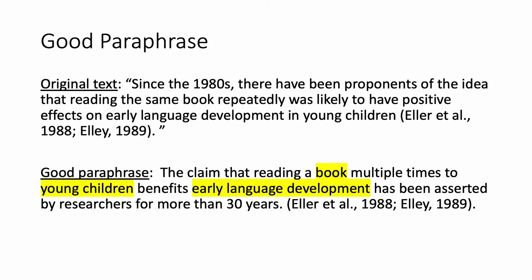Here is an example, finally, of a good paraphrase. Here is the original text up here and a good paraphrase down here. Notice there is not as much yellow in the good paraphrase — not as much is the same from the original. Now, there are some things that are the same: I kept the words 'book,' 'young children,' and 'early language development.' This is okay because these are the standard vocabulary used in early childhood development. I don't need to find a synonym for absolutely every single word — if the word is the best word to use, it's okay to keep it. But you have to be careful to change enough of the sentence so it's not exactly the same.